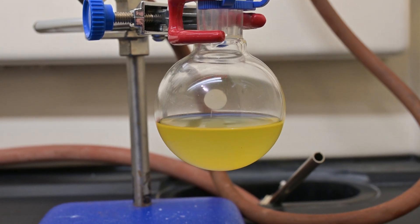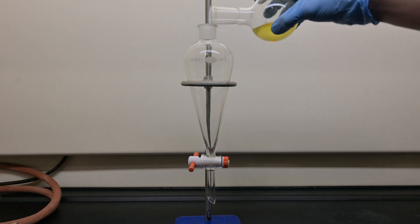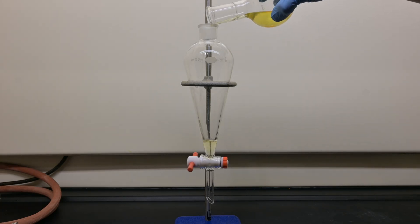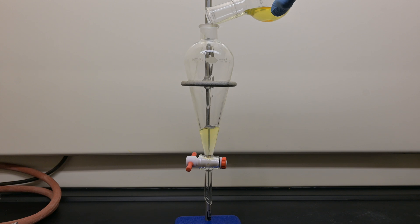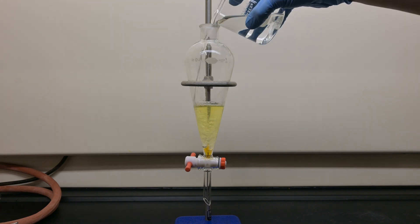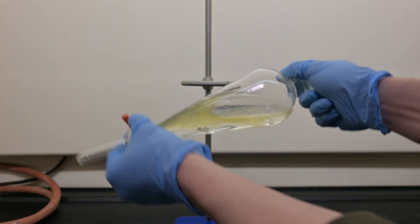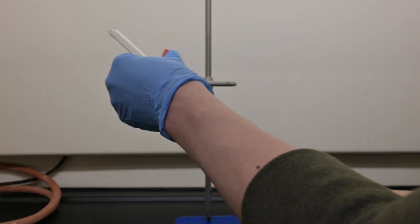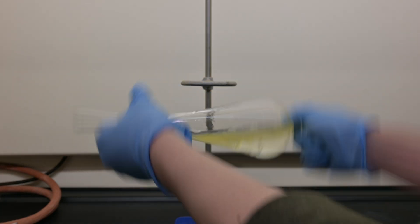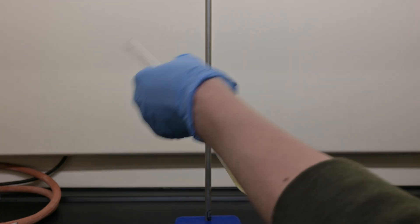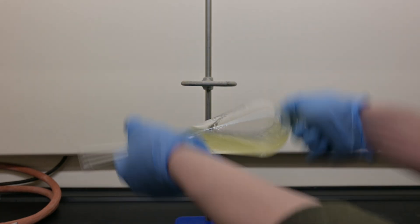Styrene is not water-soluble, but acrylonitrile is. By transferring the distillate to a separatory funnel, then washing the distillate with water, we can remove the acrylonitrile and any other water-soluble impurities. Our non-polar styrene is immiscible with water and will just float on the surface.